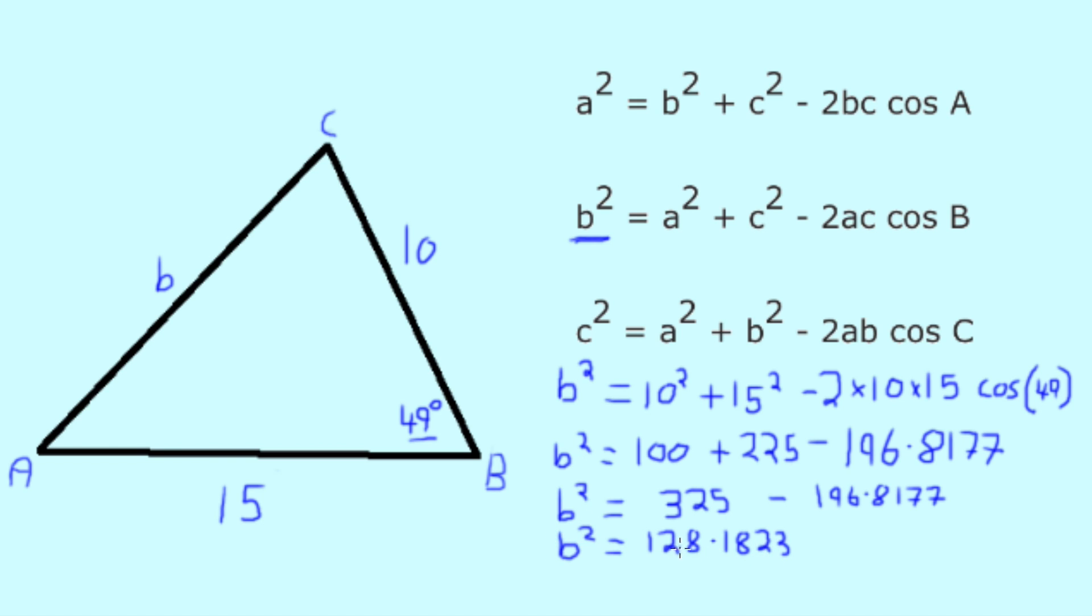But, as we know, this is not our final result, as we need to find b on its own. So, to get an answer that is not squared, we simply use our calculator's square root function and enter our 128.1823 to get the answer 11.3218, remembering to keep to our 4 decimal base rule. So, we know that our side equals 11.3218.